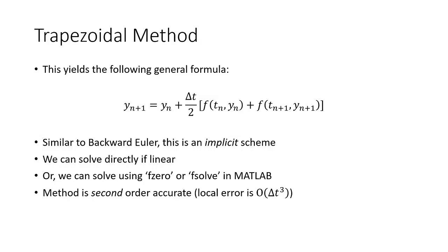Unlike the forward Euler and backward Euler methods, this is a second order accurate method. So our local error is on the order of delta t to the third, whereas those two methods were only first order accurate. So the trapezoidal method is going to give you a better approximation of your solution.